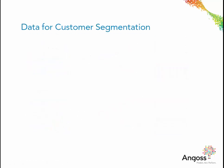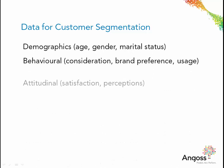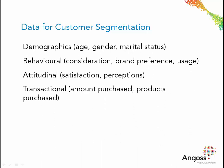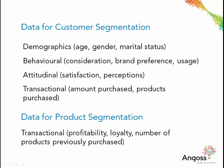Data used in product segmentation can vary widely. Initially, customer segmentation is performed using demographic, behavioral, attitudinal and transactional information. For product segmentation, important transactional information such as profitability, loyalty and number of products previously purchased can be used to further segment the data and better assign product offerings.